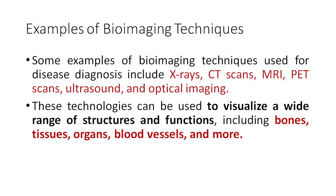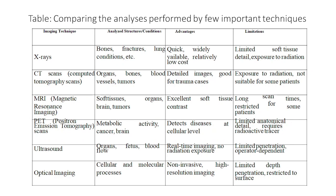Examples of bioimaging techniques used for disease diagnosis include X-rays, CT scans, MRI, PET scans, ultrasounds, and optical imaging. These technologies can be used to visualize a wide range of structures and functions inside the body, including bones, tissues, organs, blood vessels, and more.